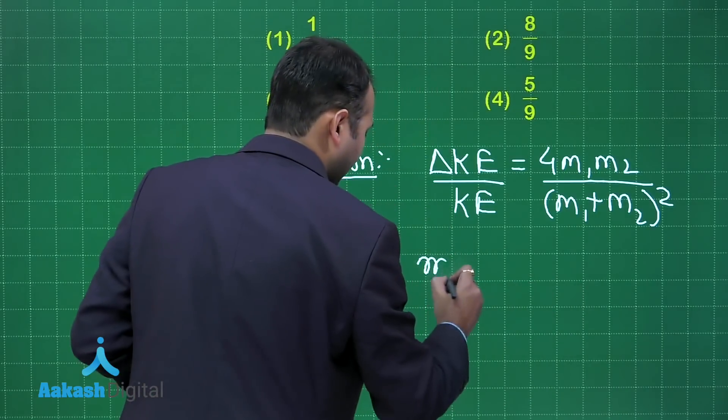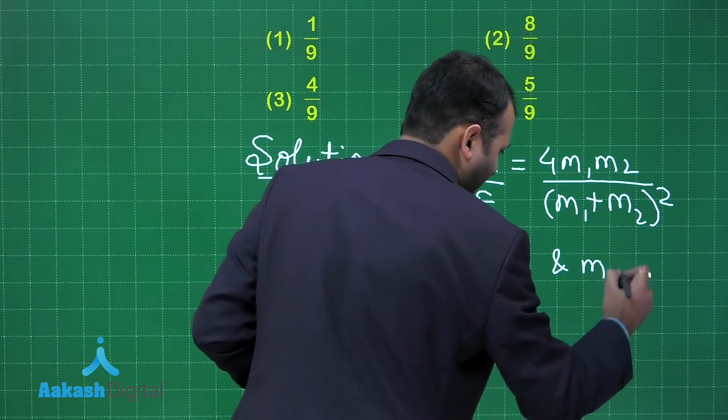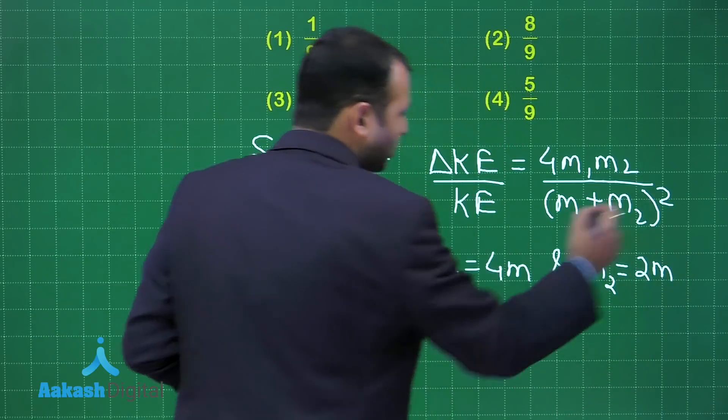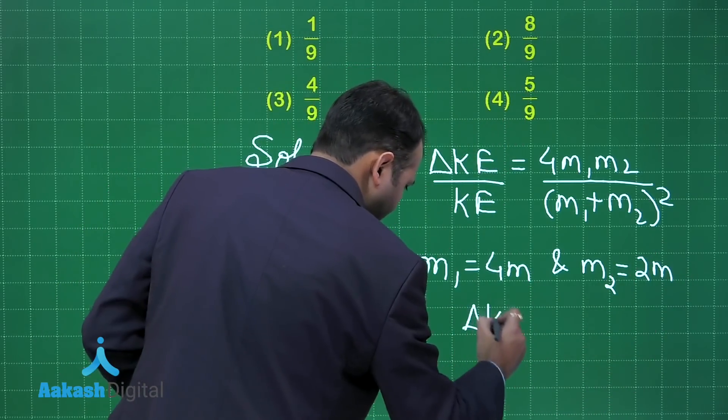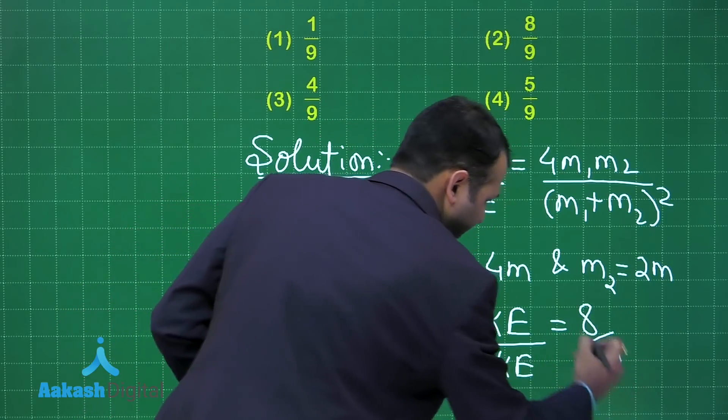Now here we are going to take m1 as 4m and m2 as 2m. When you put down the values, you will get this answer as 8 by 9.